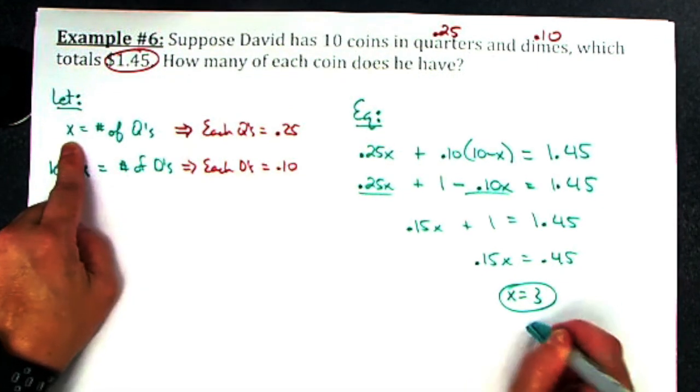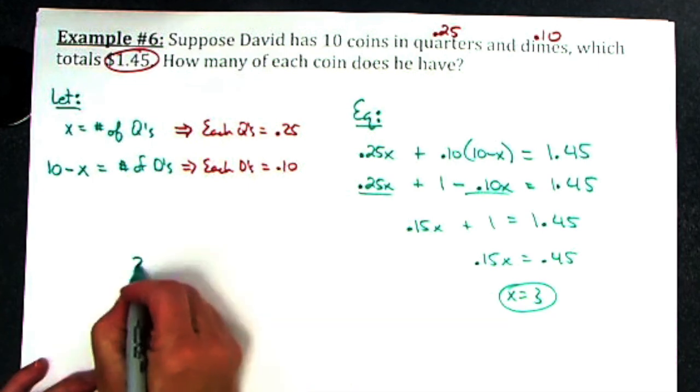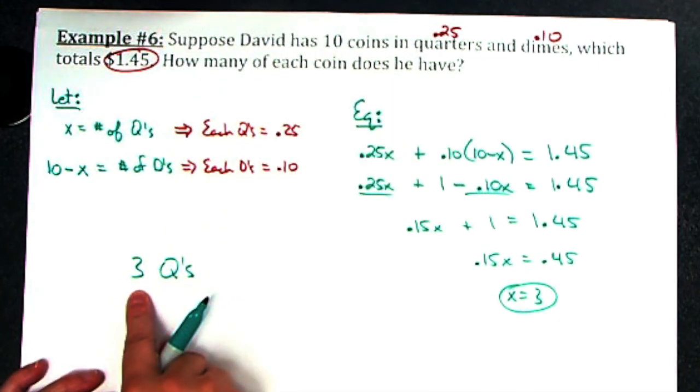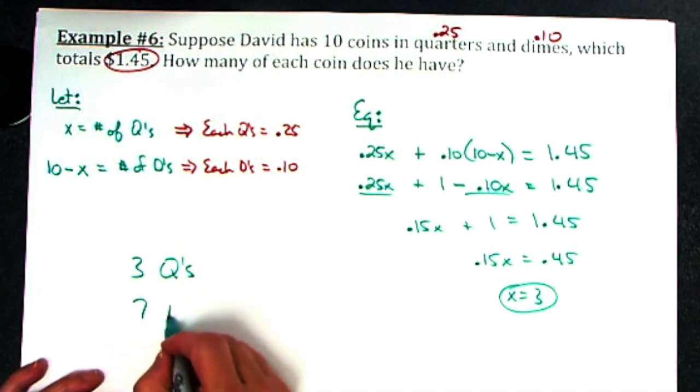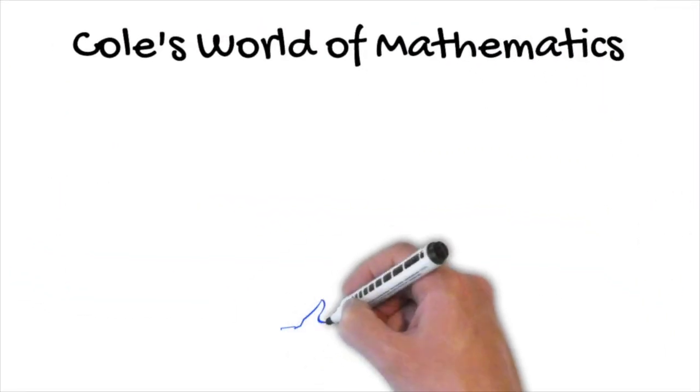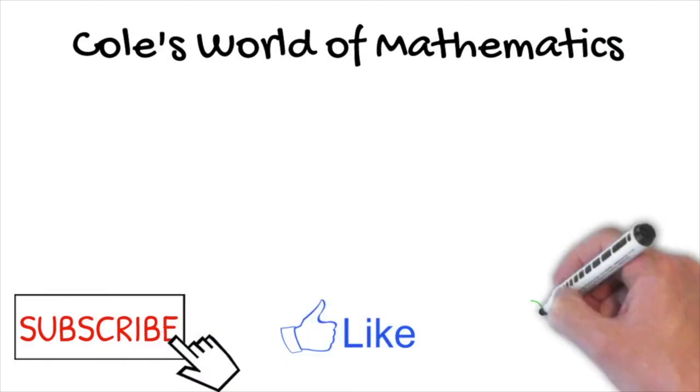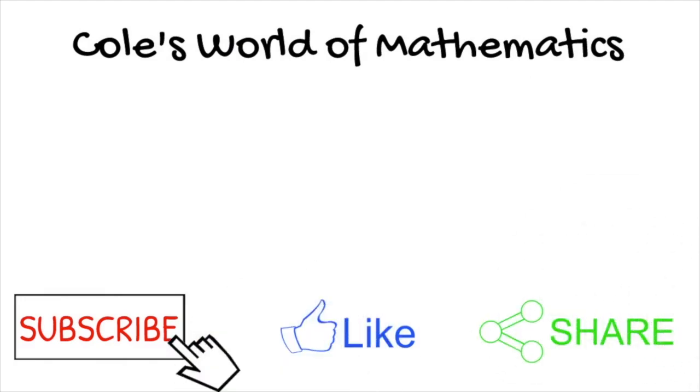So x is the number of quarters, so I've got three quarters. Three quarters, and then 10 total, so then I have to have seven dimes.